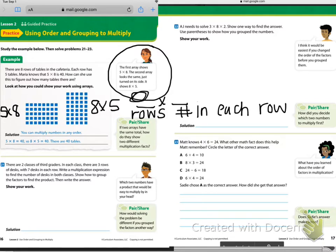So the solution we found was that we can multiply numbers in any order. If Maria knows that five times eight is 40, then she knows that eight times five is 40. Remember, we call this the commutative property where we can flip-flop our factors. If we switch them, eight and five, that turns into five and eight. So there's going to be 40 tables in the cafeteria.